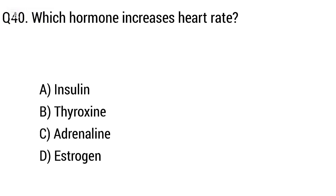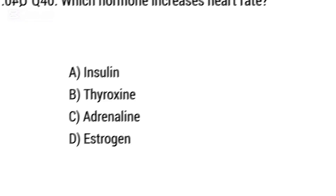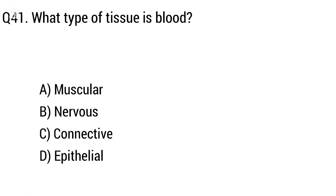Question 40: Which hormone increases heart rate? Option A: insulin, B: thyroxine, C: adrenaline, D: estrogen. The right answer is option C, adrenaline.